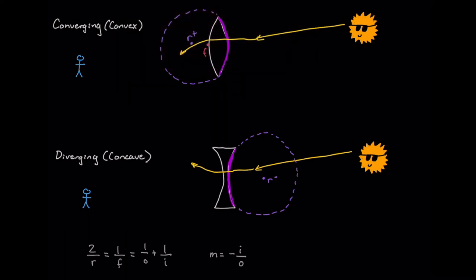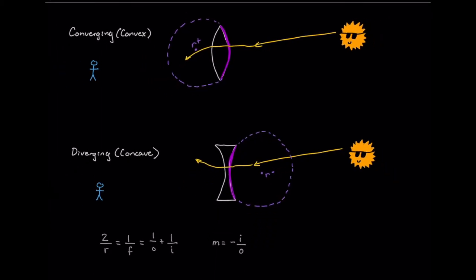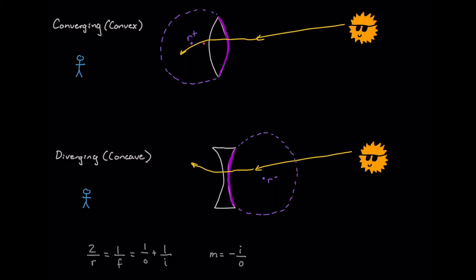So f will also be positive, because it's on that same side of the lens. I should probably draw a little bit further out than I have here. And then f will be half here. Okay, so that's the focal point. Oops, that's going to be negative there.